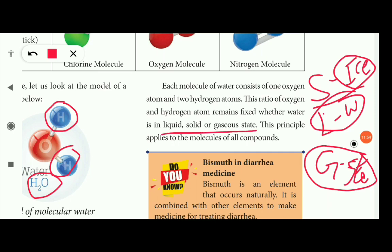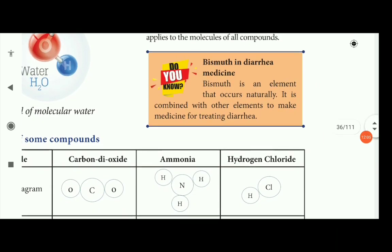This principle applies to molecules of all compounds. For example, bismuth in diarrhea medicine — bismuth is an element that occurs naturally and is combined with other elements to make medicine for treating diarrhea.